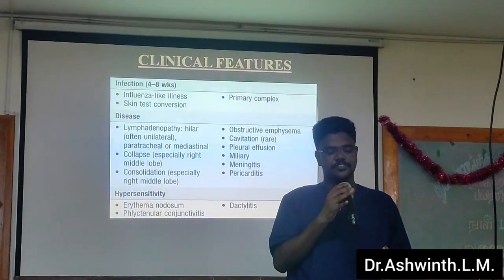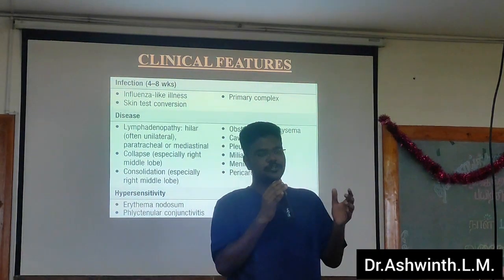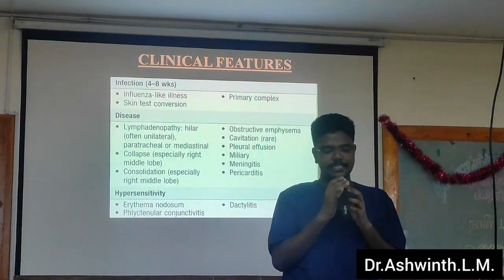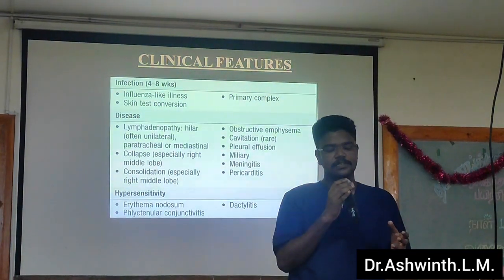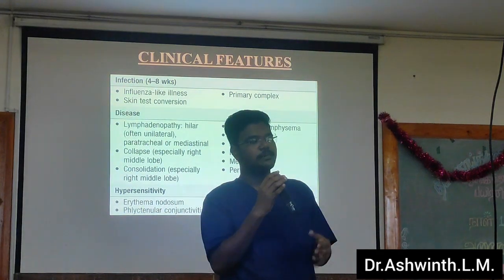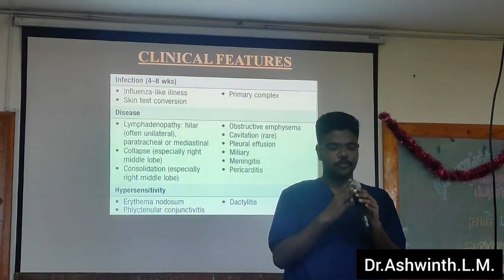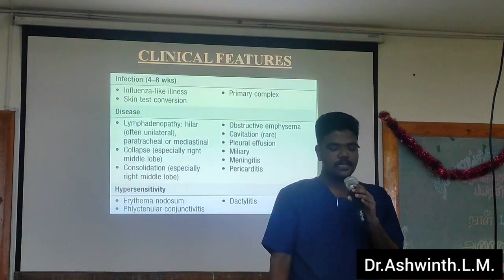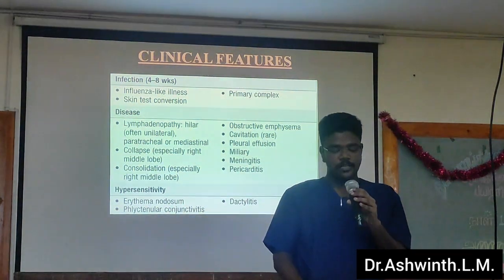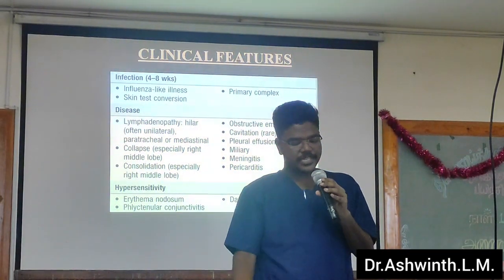These are the clinical features of primary tuberculosis. The symptoms usually show between 4 to 8 weeks. It is an influenza-like illness. This is the primary complex presenting feature. The skin test conversion — the Mantoux test can turn from a negative result to a positive result in 4 to 8 weeks. There is also lymphadenopathy, hilar lymphadenopathy, paratracheal mediastinal involvement, consolidation of the right middle lobe, and obstructive emphysema.